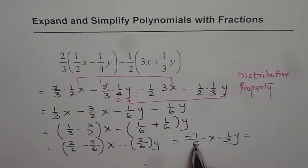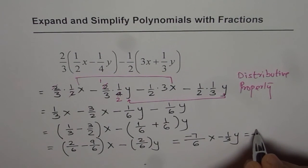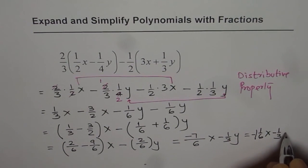It is a good idea to always write your fractions as either proper or mixed numbers. So minus 7 over 6 can be written as minus 1 and 1 over 6x minus 1 over 3y.